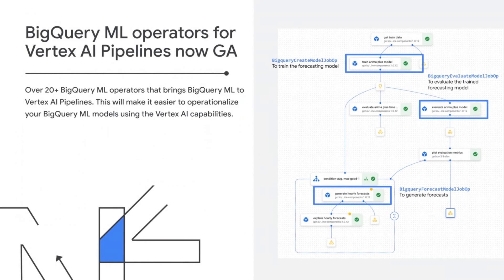Honing in on pipelines for orchestration: instead of running individual training or deployment steps manually or ad hoc, you can stitch them together using components of a Vertex AI pipeline that you can then trigger, schedule, or execute as a single flow. We're also happy to announce that these components now support BigQuery ML. You can use Vertex AI pipelines to stitch together various BigQuery and BigQuery ML operations — either on their own or combined with AutoML and custom models — to see which model performs best before deploying.